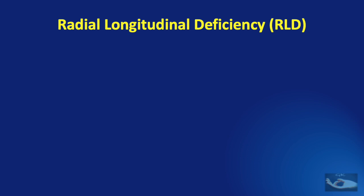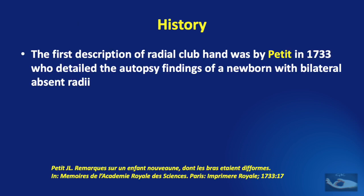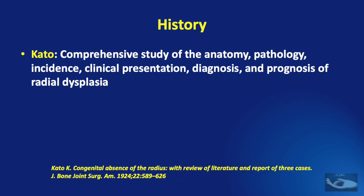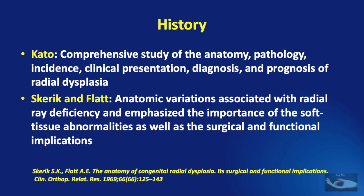Radial club hand, a term used earlier, is actually part of a spectrum of problems involving the radial side of the developing upper limb known as radial longitudinal deficiency. The first description was by Petty in 1733, who detailed autopsy findings of a newborn with bilateral absent radii. Grube reviewed the literature with 14 cases in 1865. Later, Cato made a comprehensive study of anatomy, pathology, incidence, clinical presentation, diagnosis, and prognosis. Skeric and Adrian Flatt studied anatomic variations and emphasized the importance of soft tissue abnormalities and surgical implications.